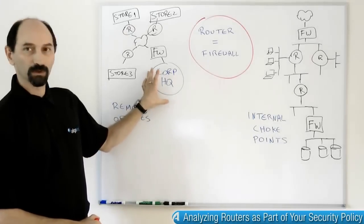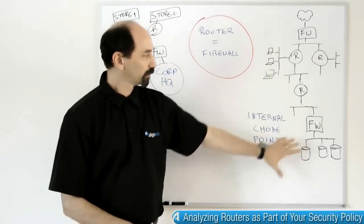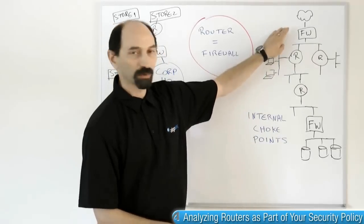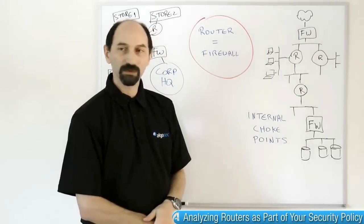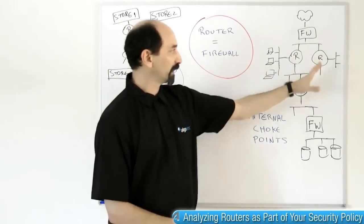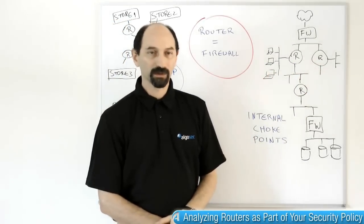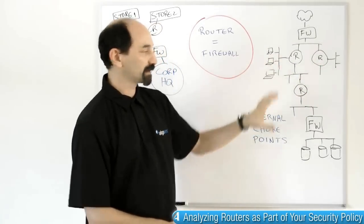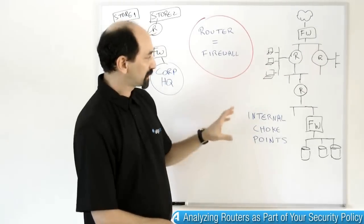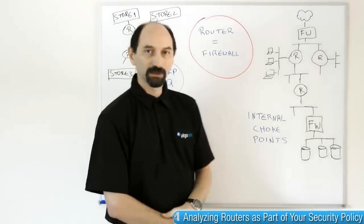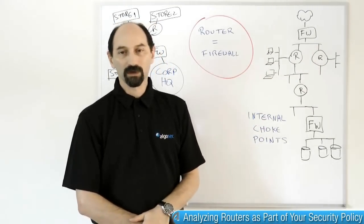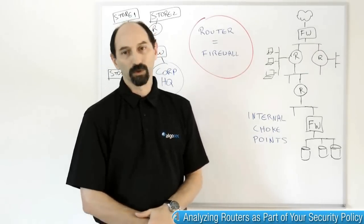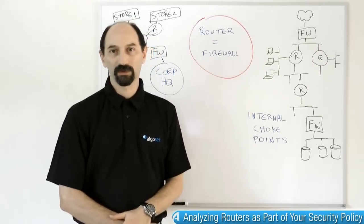If you look inside corporate headquarters, which is zoomed in over here on the right, you can see that behind the corporate firewall there are many routers that are segregating different parts of the network and separating them from each other. So you have different business units and business functions that need to communicate and those routers are enforcing the policy, allowing or blocking traffic from various points to various other points.